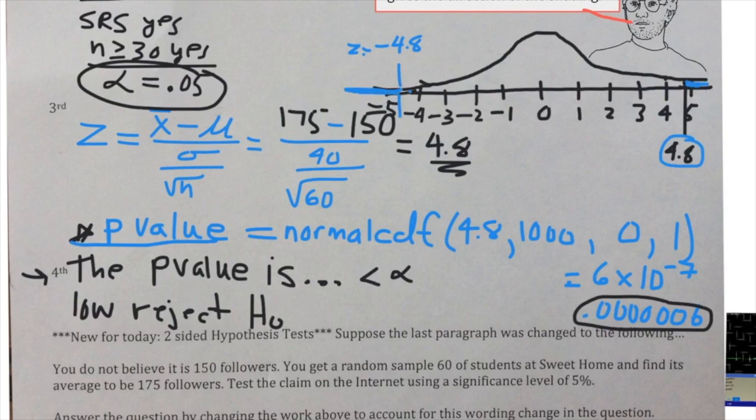The only other impact that has on this particular question is on the p-value. We're going to have twice as much probability, so you're going to take that number and double it, which ends up being about 1.2 times 10 to the negative 6, which is still a very very small amount of probability.